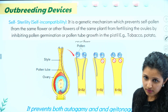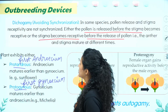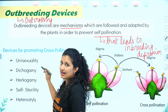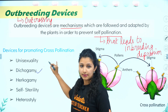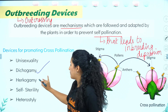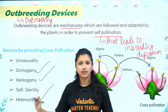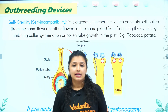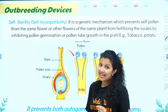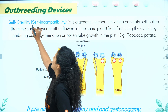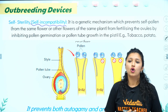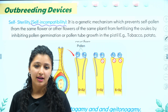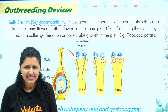We have now learnt Dichogamy — protandry and protogyny — and Herkogamy with heterostyly. Next is Self-sterility, also called Self-incompatibility. Incompatibility means they are not compatible. That is all it means. This is a genetic mechanism involving chemicals.